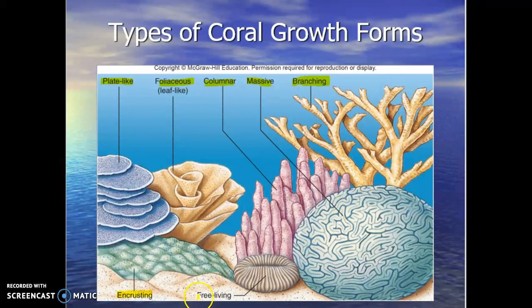Occasionally you find free-living growth forms where it's just a little coral — sometimes you'll see these in the turf grass beds, just a little coral growing there, maybe the size of a softball. Generally, we'll see various growth forms throughout different parts of the reef ecosystem.